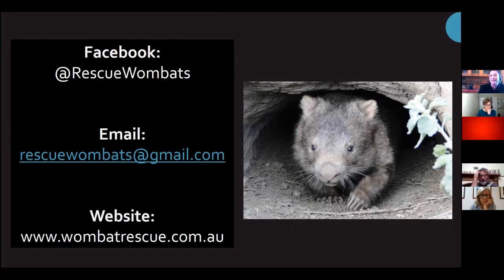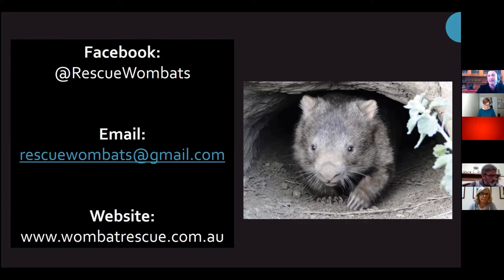Fiona is asking: what range do wombats have? Depending on location — bushy, rocky terrain with rivers versus flat farmland — wombats can have a range of up to 20 hectares. They do roam a lot. If they are sick, the mangy ones stay close to their primary burrows because that's their haven of safety.